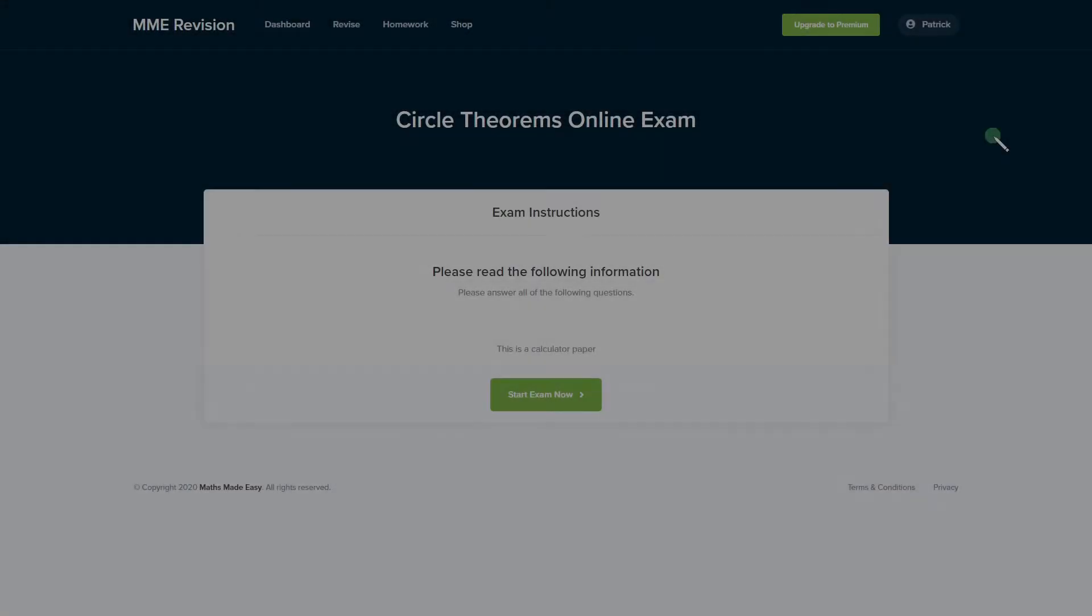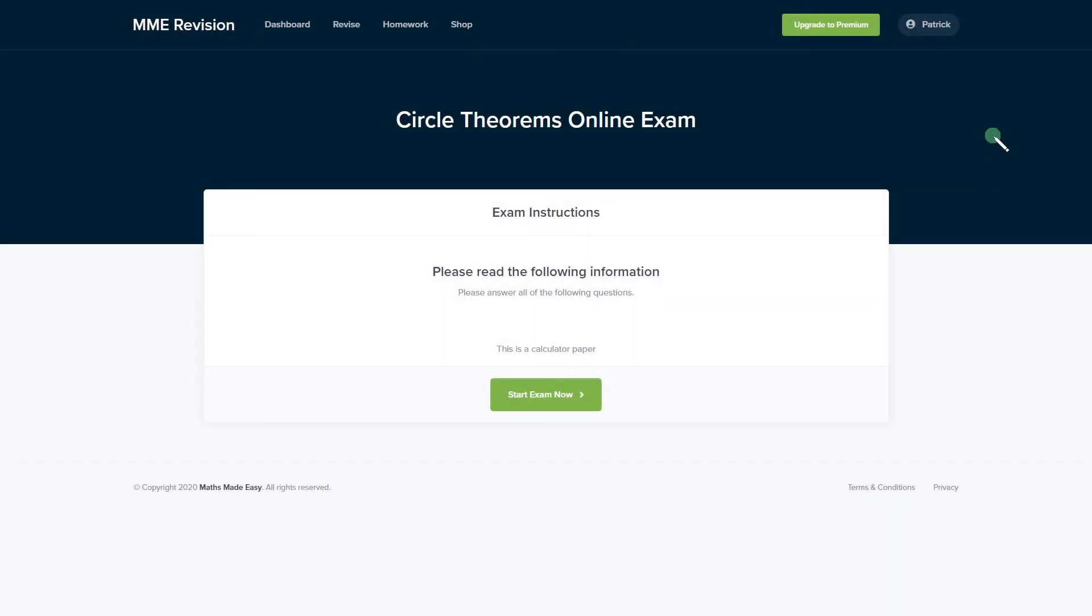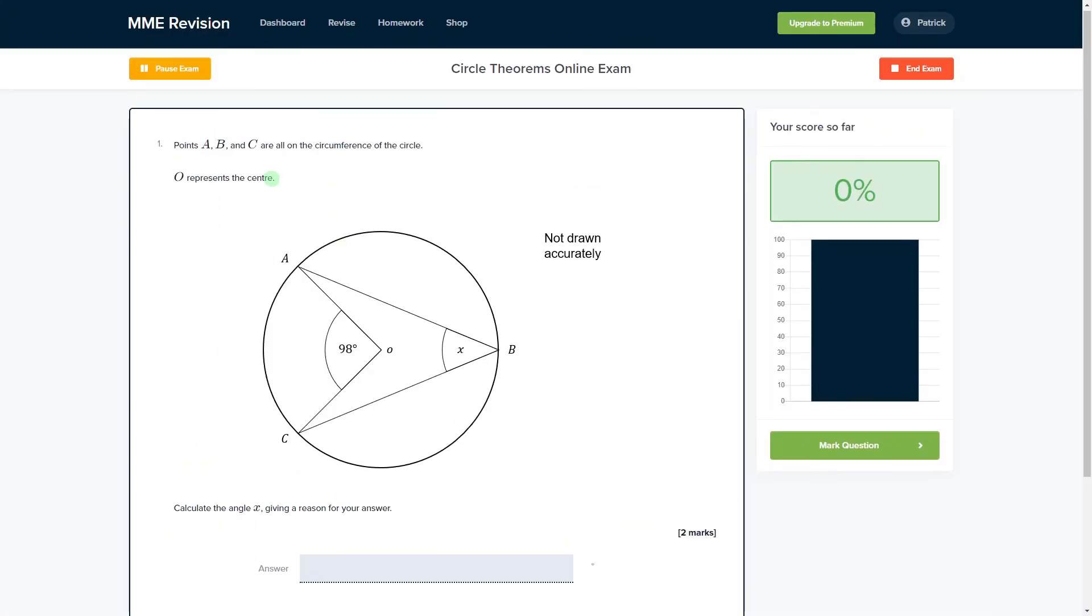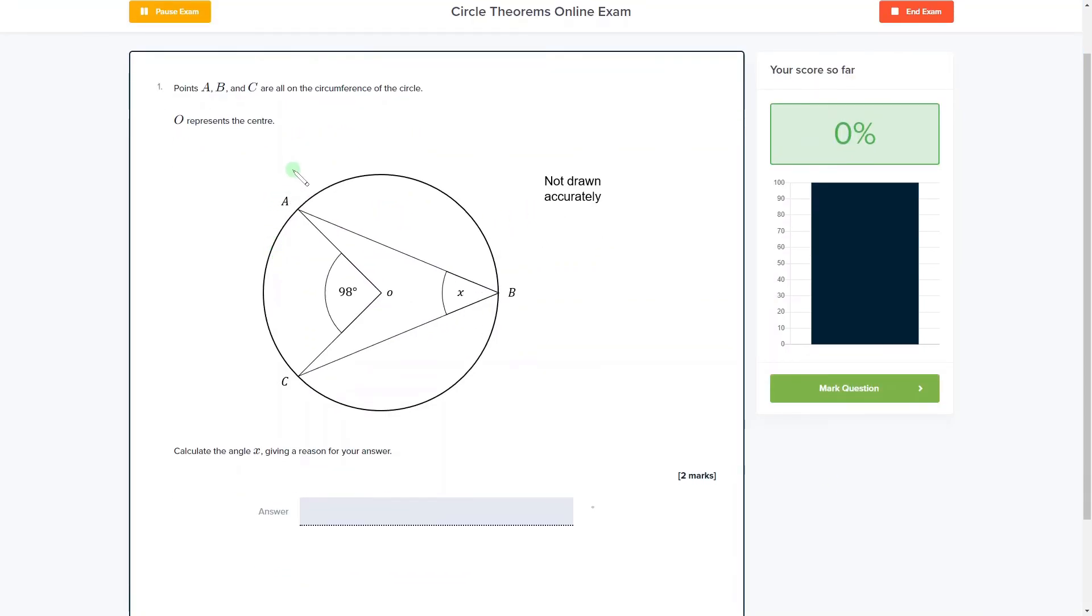So if you'd like to get more practice with some circle theorems exam style questions, you can have a go at our online exam, which you can find through our revision platform. You'll find a variety of different question types, plenty of different questions to practice, and you get instant feedback on each and every one of them. So this is really useful if you want to try and get some feedback on the areas that you need to improve on. If you are interested and you want to take the exam, then please click the link below.